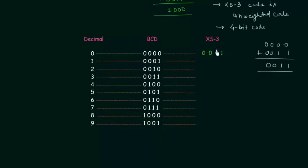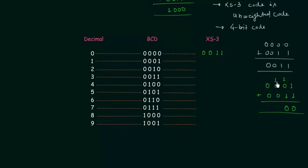In the same way we calculate XS3 for 1. 1 in BCD is 0001, and we add 3 to get 0100. So XS3 code for 1 is 0100. For 2 we will have 5, which is 0101. For 3 we will have 6 — 3 plus 3 is 6 — so 0110.